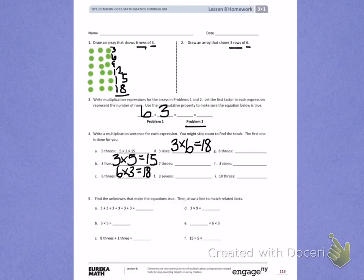Letter A. I have a repeated addition problem. I see I have 1, 2, 3, 4, 5, 6 threes. Counting by threes: 3, 6, 9, 12, 15, 18.